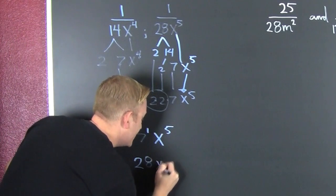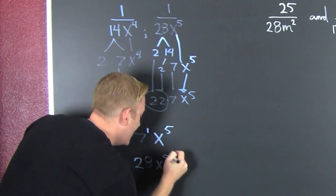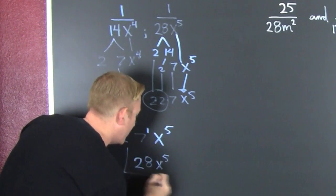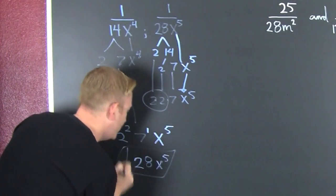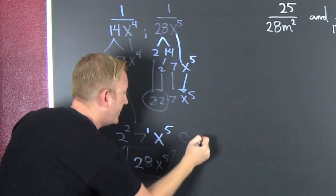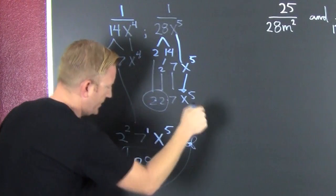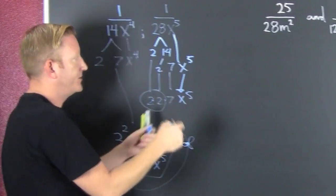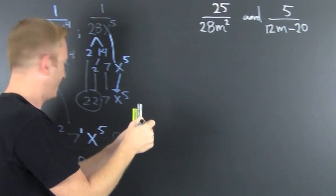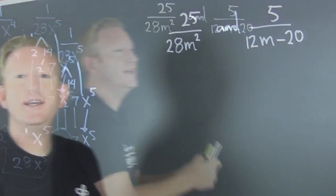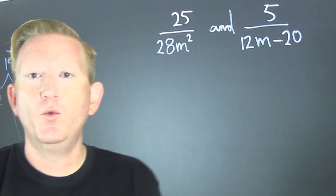Four times seven is 28 — yes, 28 — times X to the fifth. And we found our common denominator.